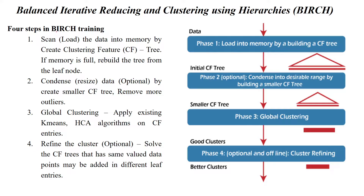BIRCH has four steps. First, we have to load the entire data into memory by creating a clustering feature, simply called CF. The clustering feature is called a tree structure. If the memory is full, then we have to rebuild the tree from the leaf node.